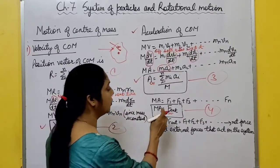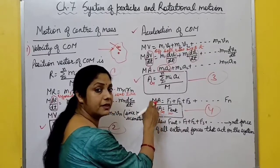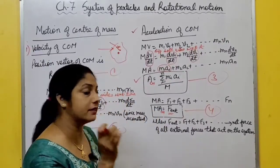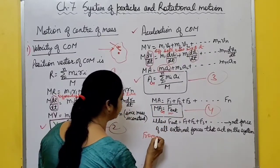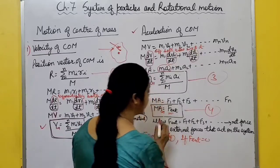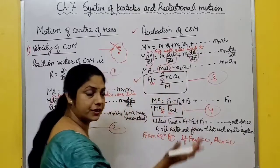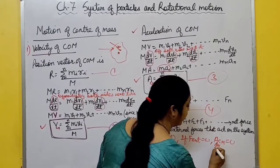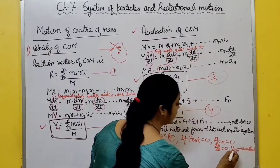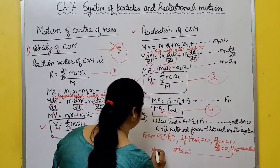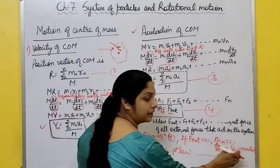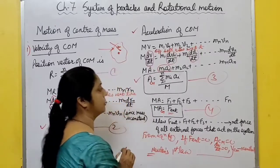From this equation: center of mass of a system of particles moves as if all the mass was concentrated at the center of mass. Also, if F_external = 0, then acceleration of center of mass is 0, meaning velocity of center of mass is constant. This is Newton's first law: if no external force acts on a body, that body moves with constant velocity.